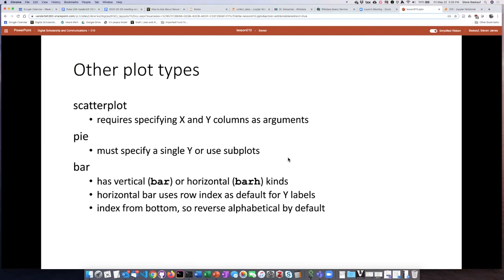Bar charts have two options. You can have a vertical bar chart in which case the bars go up and down, or in some cases it's better to have a horizontal bar chart if you have a lot of categories of data. And as I mentioned earlier, the horizontal bar chart uses the row index as a default for the Y labels and not the X labels.